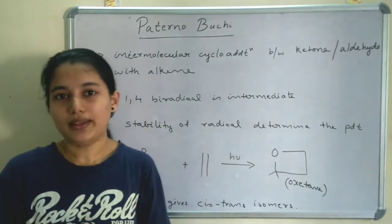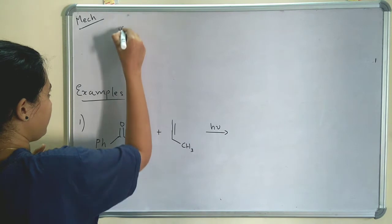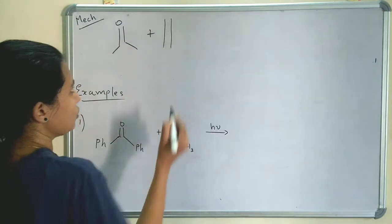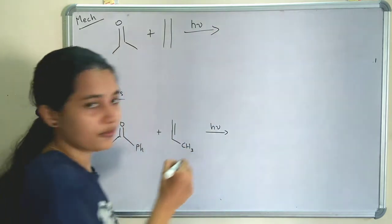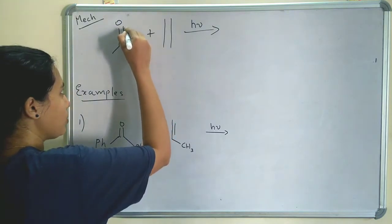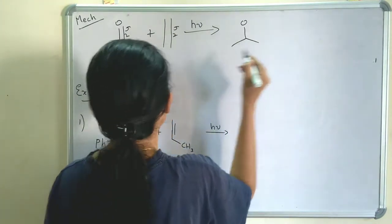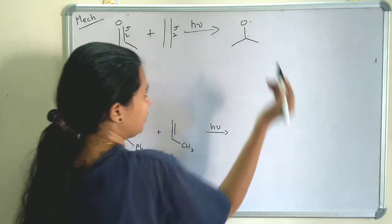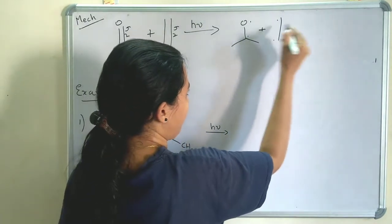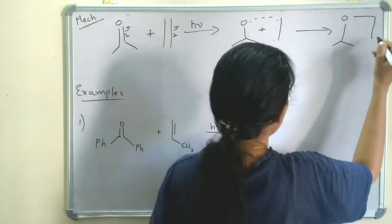Let's move on to the mechanism. We are taking a simple ketone and an alkene for the Paternò–Büchi reaction. In the presence of light, homolytic cleavage occurs — similar to Norrish type 1 and 2 — so this bond cleaves homolytically. We get a radical here and a radical here, and also two radicals from the alkene. These can then form a bond, giving us a 1,4-biradical.